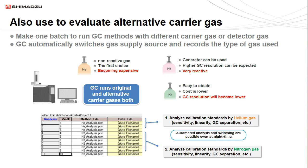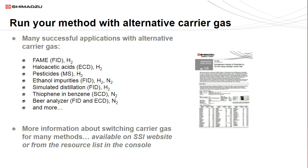Here are a few of the projects that we've done recently using carrier gases other than helium, and in each case we saw some pretty good results. We recently did a FAMES analysis using hydrogen, an HAA analysis using hydrogen, and a pesticide analysis using hydrogen. We also looked at ethanol impurities using hydrogen and nitrogen, did a simulated distillation using hydrogen, and we've looked at thiophene and benzene and are working on a beer analyzer, both using nitrogen. The majority of these were done using hydrogen, and we'll talk about some of the reasons for this along with tips for changing your carrier gas in the next few slides.